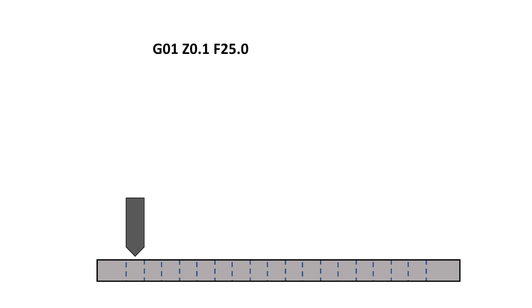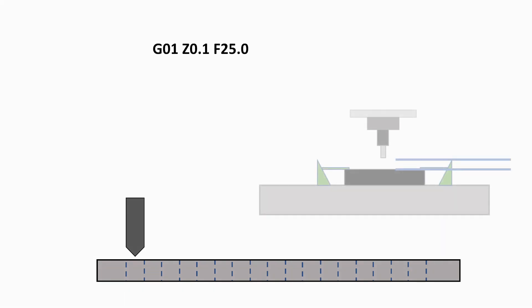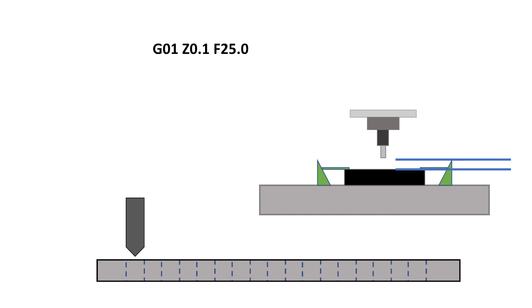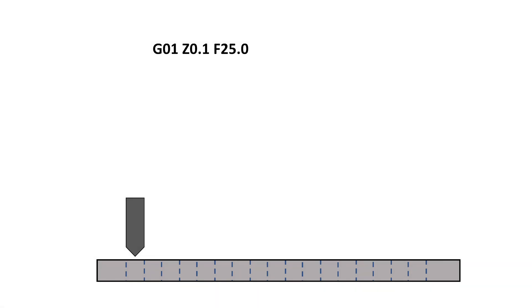We begin by sending the drill to the initial plane. Remember, the initial plane is the last position that the cutting tool is at in the Z axis before it begins its CAN cycle. G01 tells the machine to travel in a controlled linear move, and Z0.1 is the initial plane. F25.0 is the feed rate at which we send the tool to the initial plane from its current position. Now we call up our CAN drilling cycle.